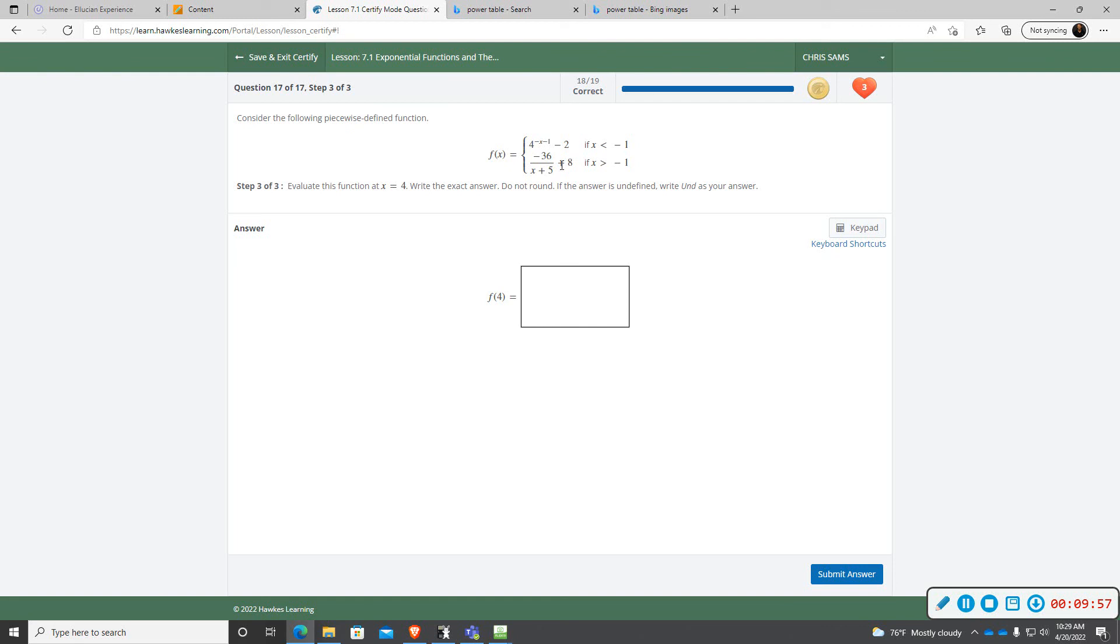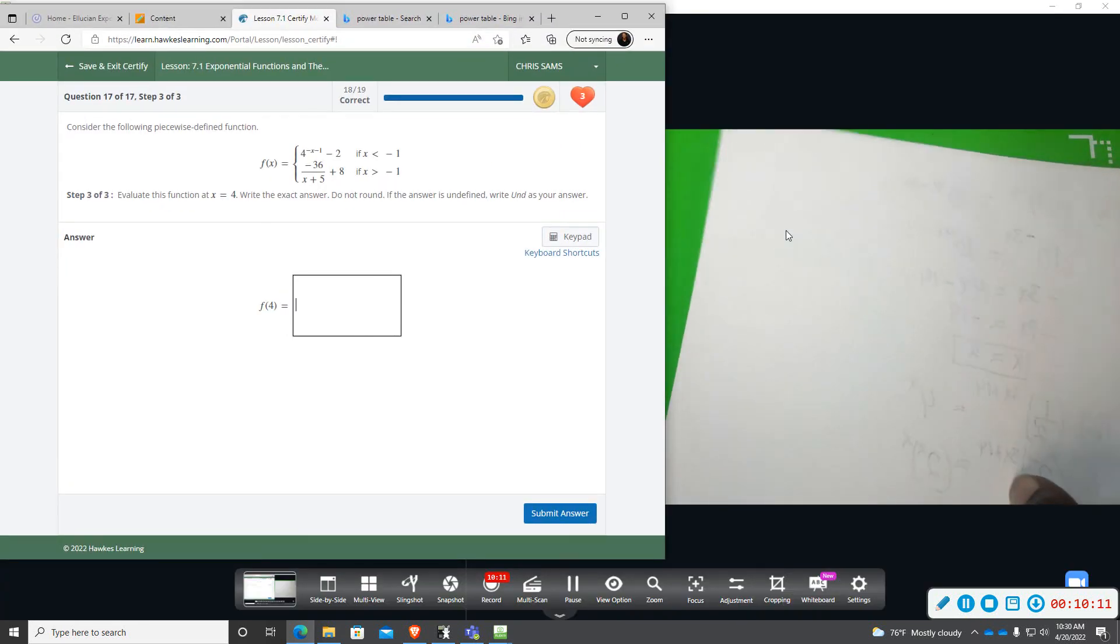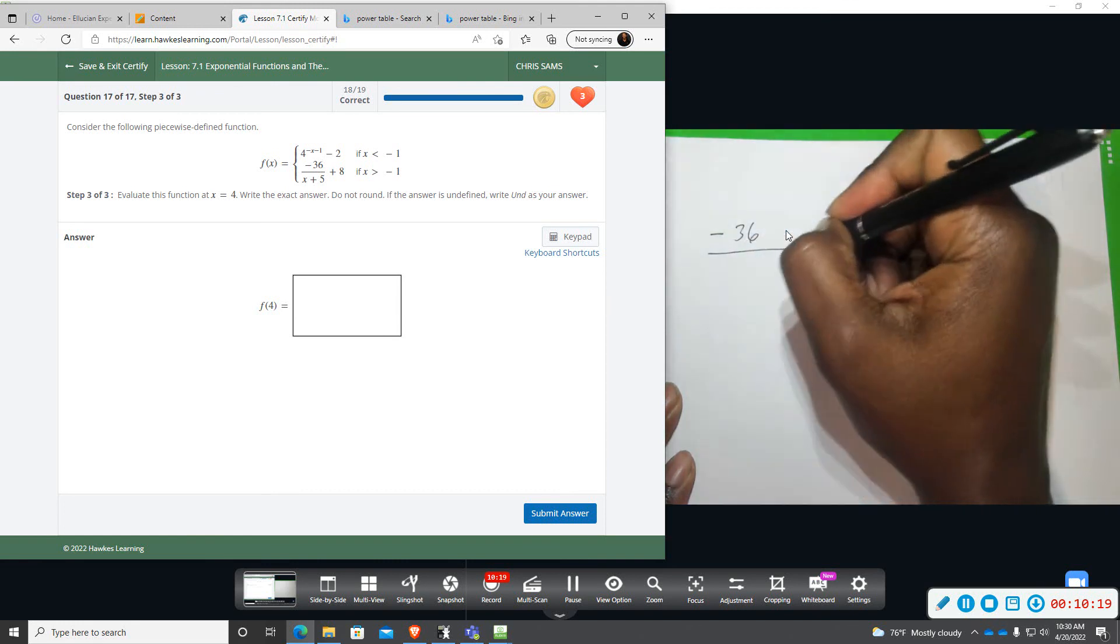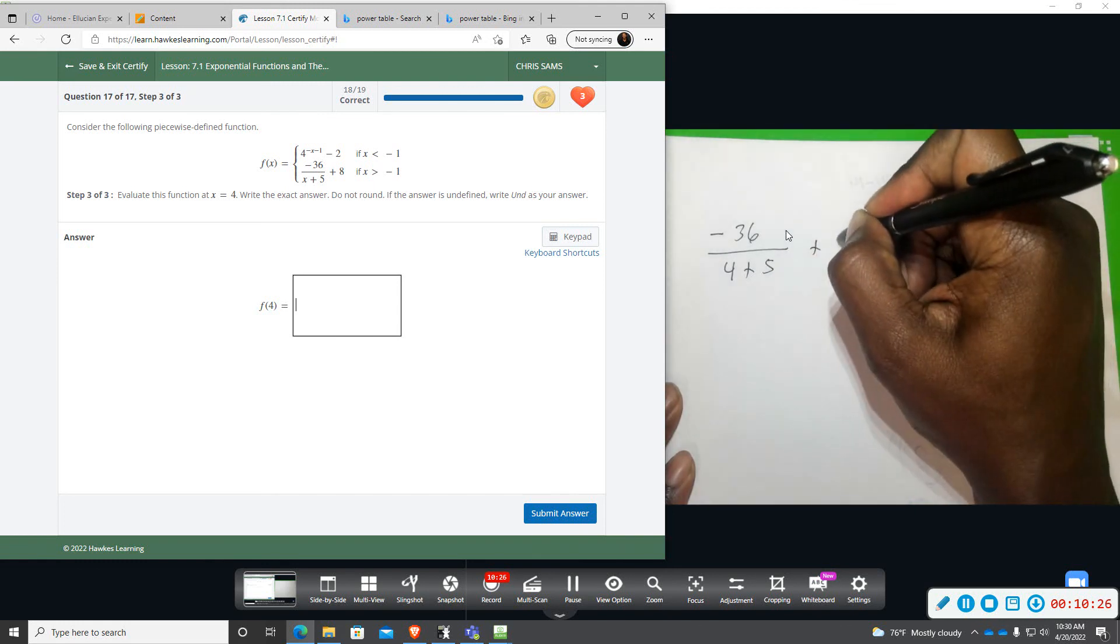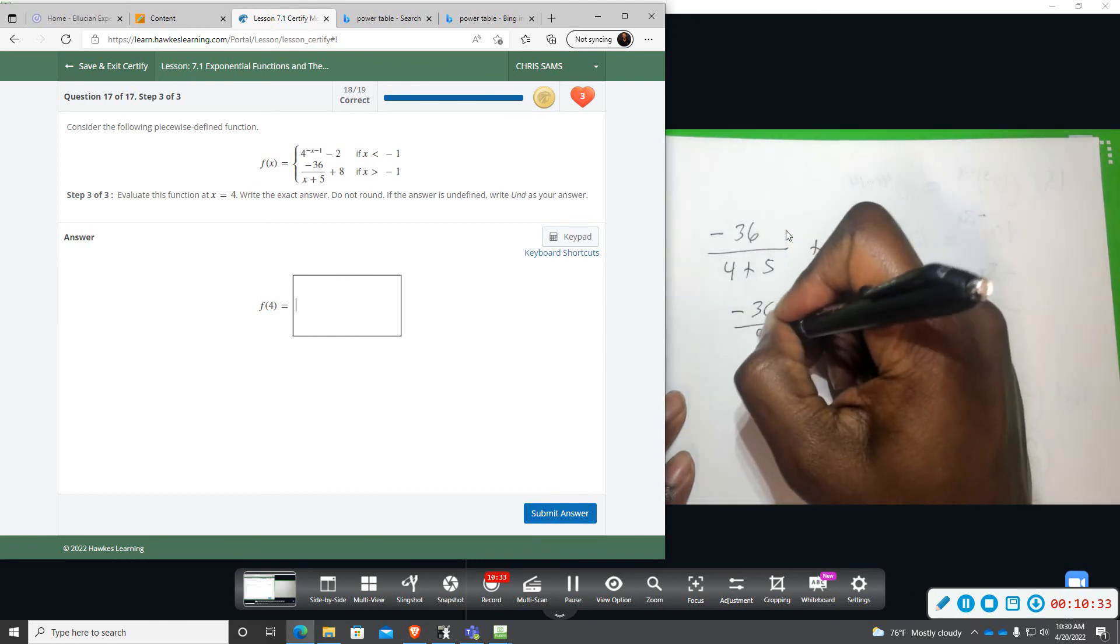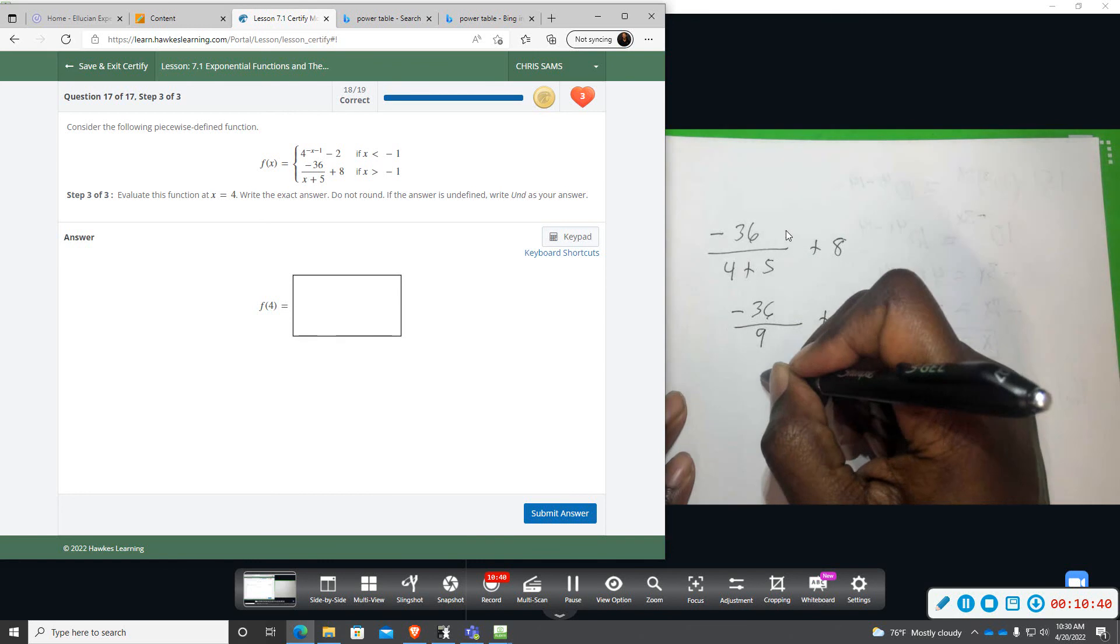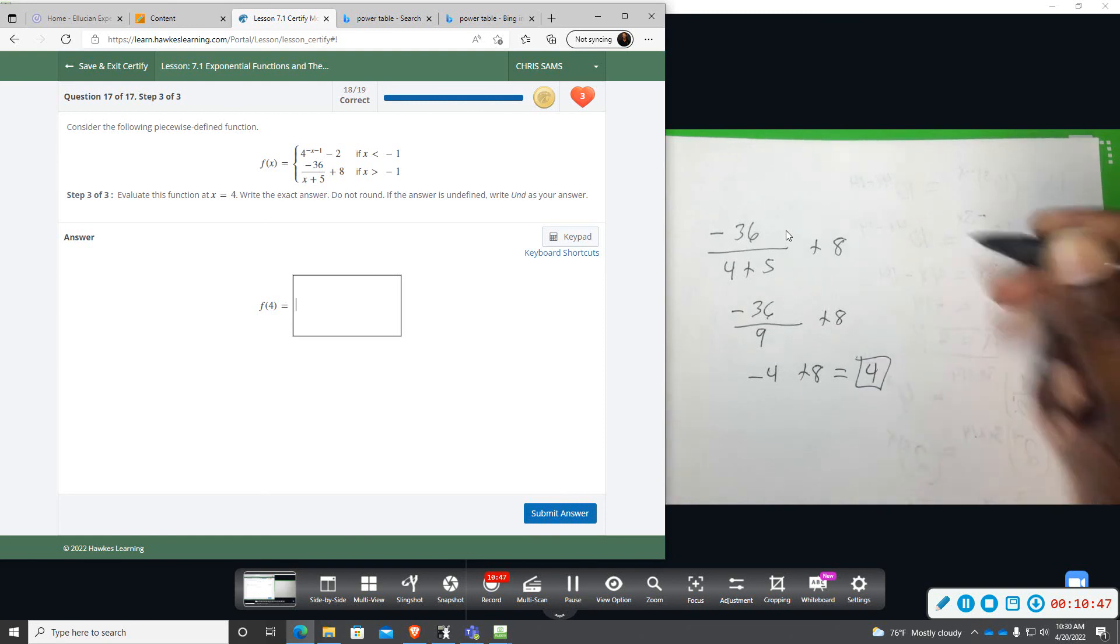And then if I type 4, this time we will use this one. Let me actually show that work for this one by hand. So you just use that bottom equation. Negative 36, and you plug in a 4, 4 plus 5, and then you have the plus 8 outside. Working down the page I have negative 36, 4 plus 5 is 9, and then I have plus 8. And then negative 36 divided by 9 will give us a negative 4 plus 8, and negative 4 plus 8 is just a positive 4.